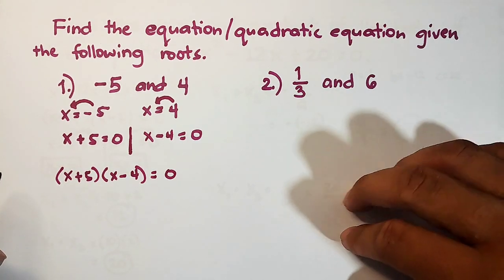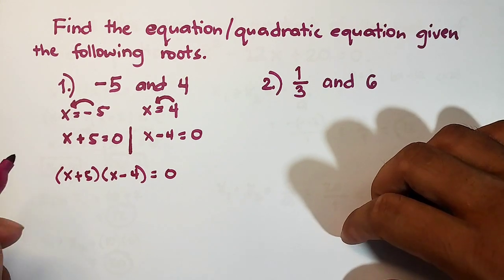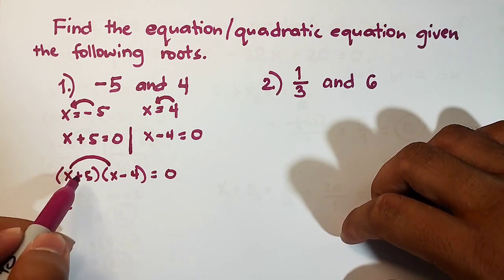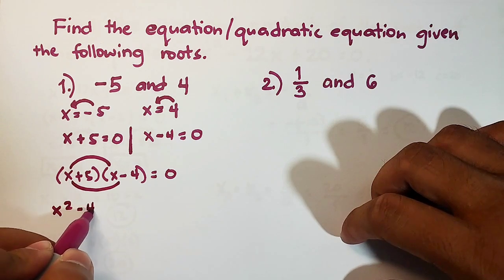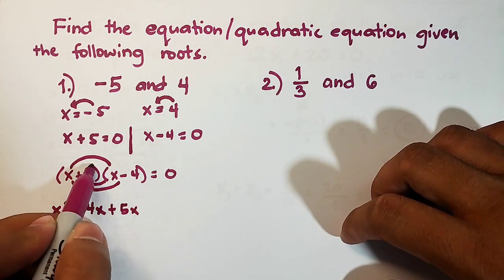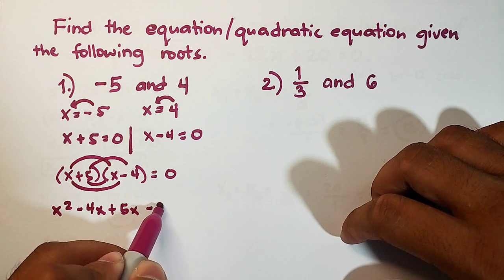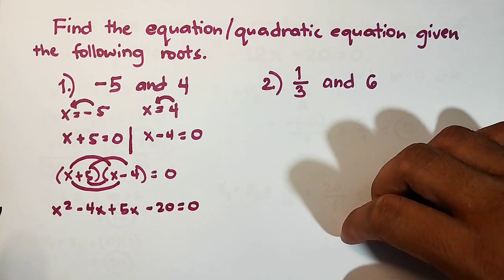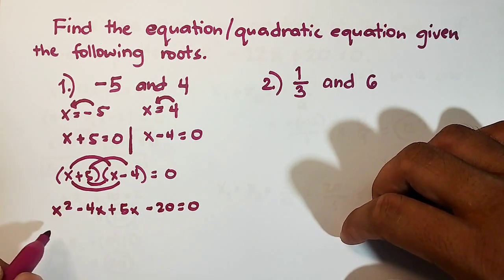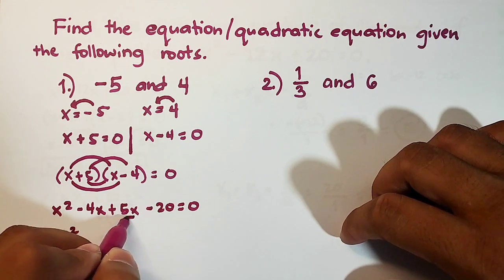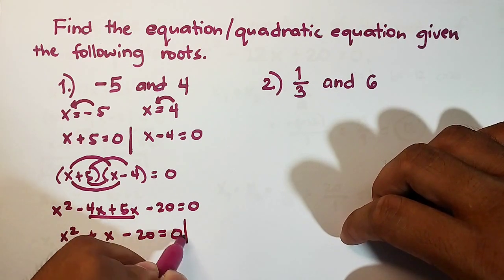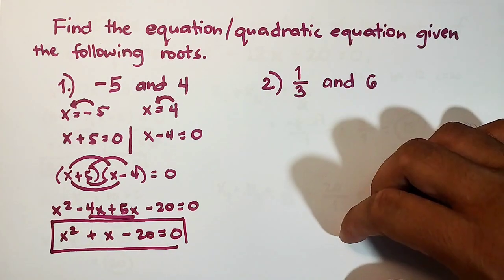We use the FOIL method to get the quadratic equation. x times x is x squared, x times negative 4 is negative 4x, 5 times x is plus 5x, and 5 times negative 4 is negative 20, all equal to 0. Combining like terms, negative 4x and 5x give plus x, so the result is x squared plus x minus 20 is equal to 0. This is the original quadratic equation.